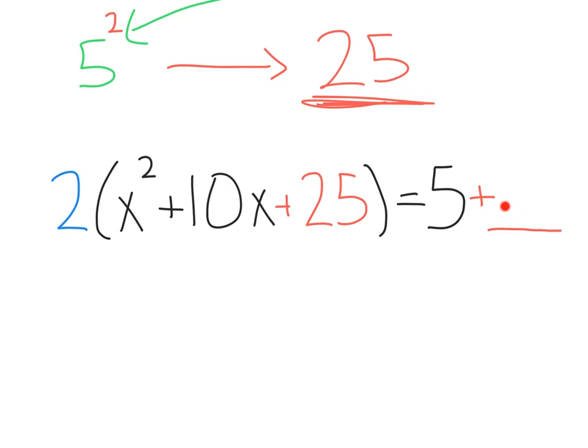Now, instead of adding 25 to the right, what we need to do is see what we actually did. We added 25 inside the parentheses, but we had already factored out this 2.